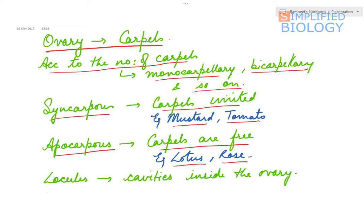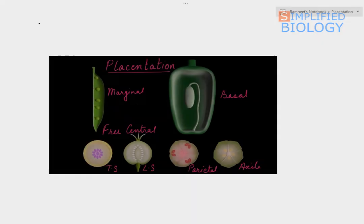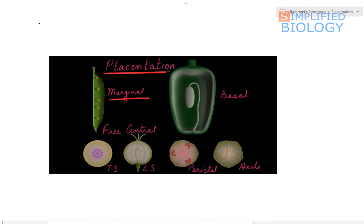Present inside the ovary are cavities called locules. The different types of placentation are: marginal, basal, free central, parietal, and axile.